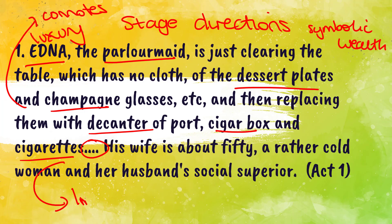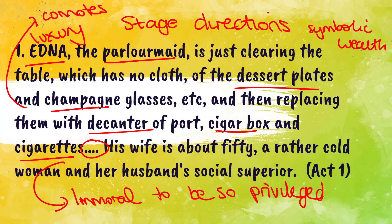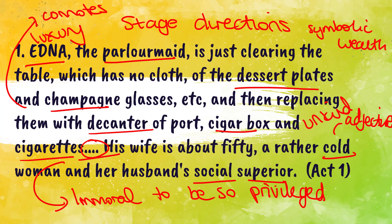You might ask what that's got to do with morality. Well, you can link it to the fact that there are poor people while this family has all this luxury - is it immoral to be so privileged when other people have nothing? That's almost a political question, but Priestley was political. Then look at the contrast: Sybil Birling is described as 'a rather cold woman' - the adjective 'cold' makes her seem unfriendly and unkind - and she is her husband's social superior.